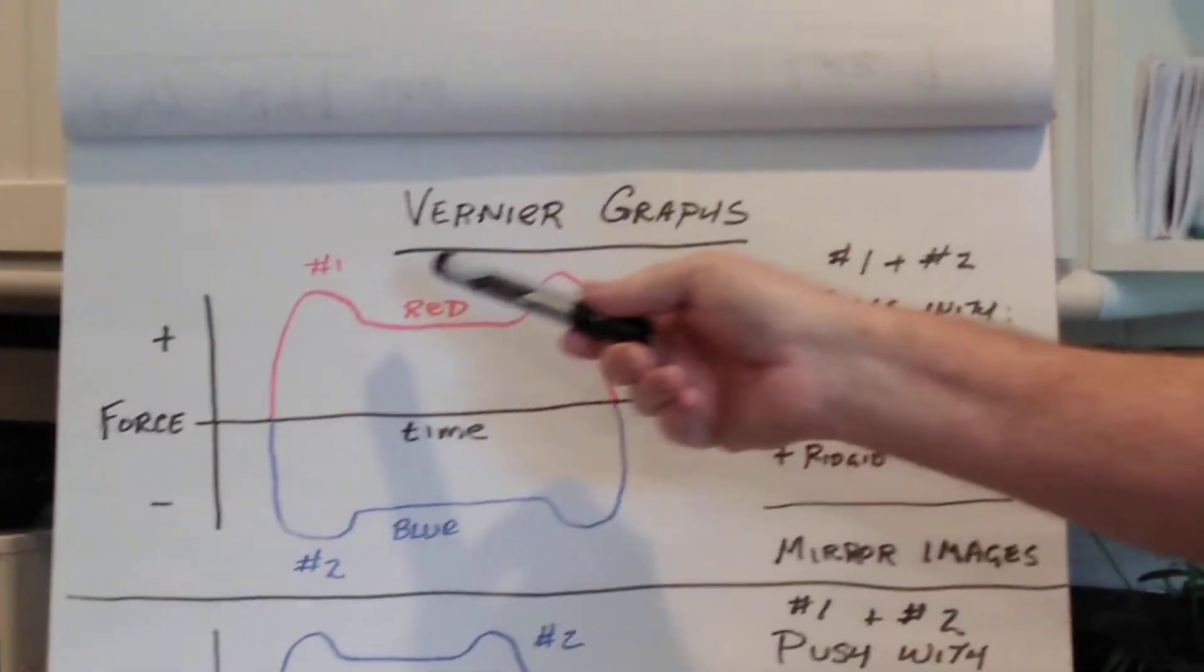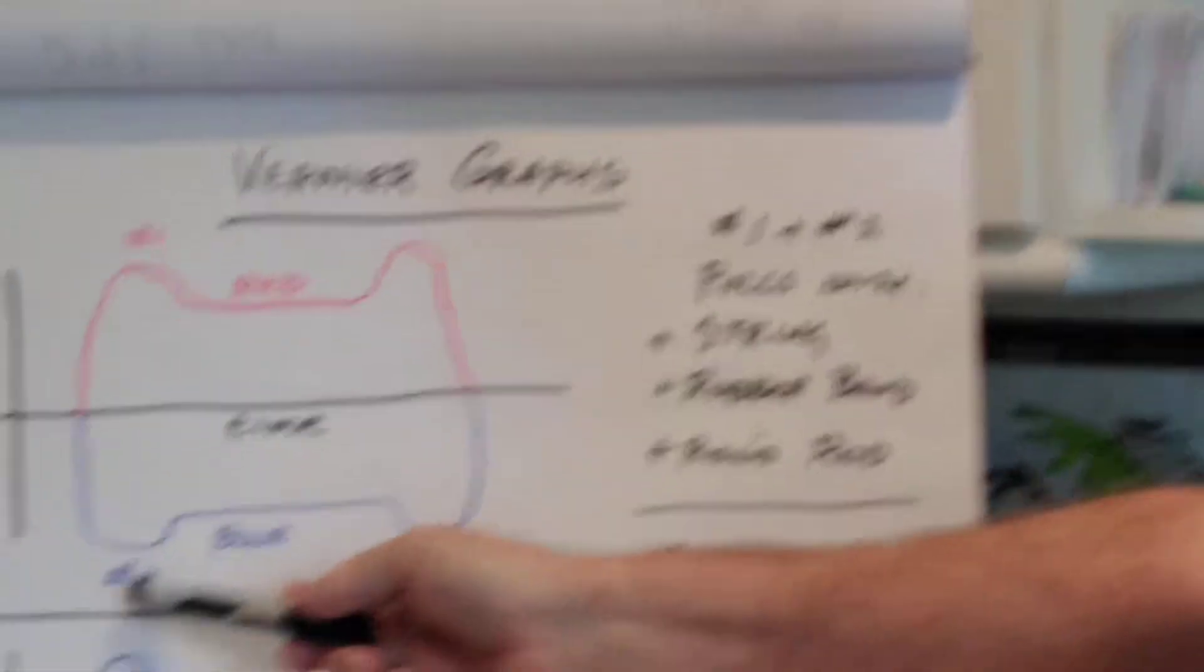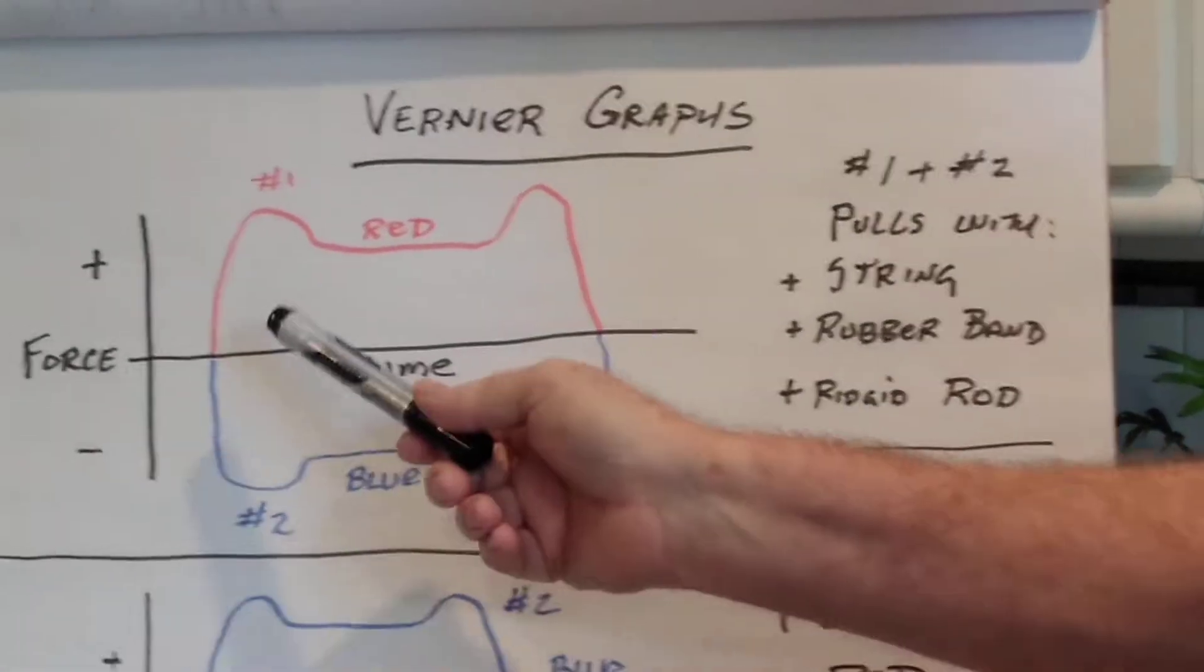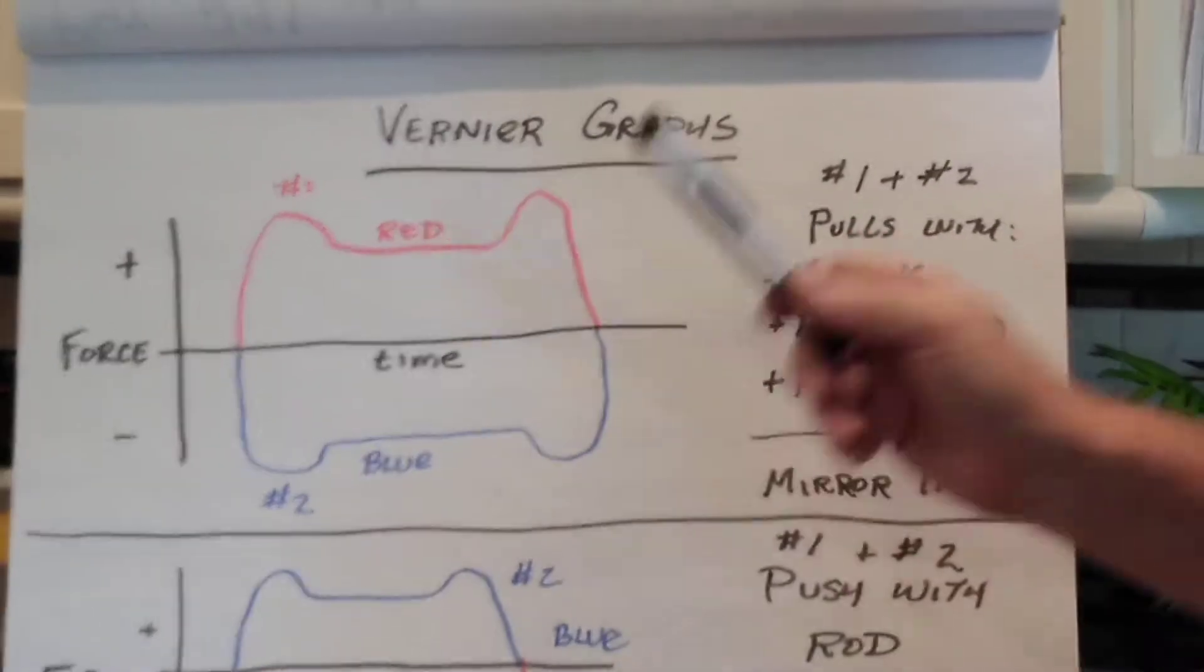Force sensor number one is labeled as such, force sensor number two is labeled as such, and the reaction for number one is in red, and the reaction for number two is in blue.